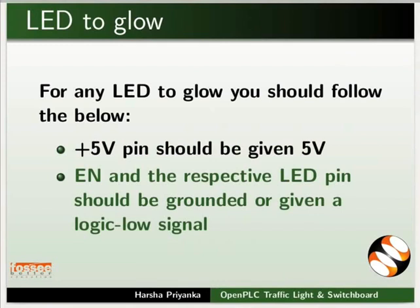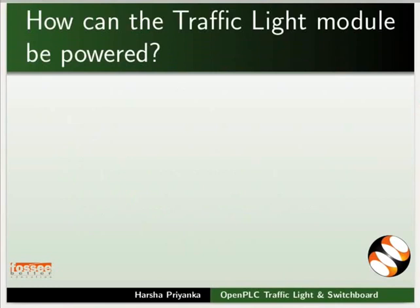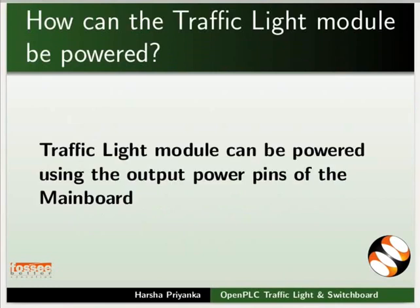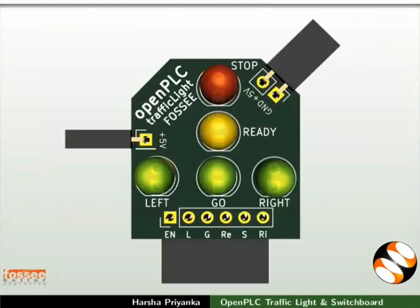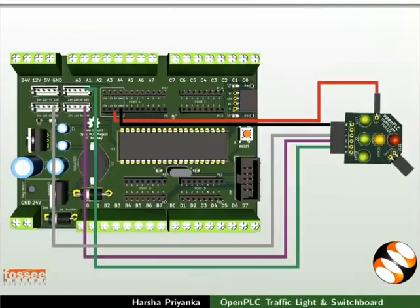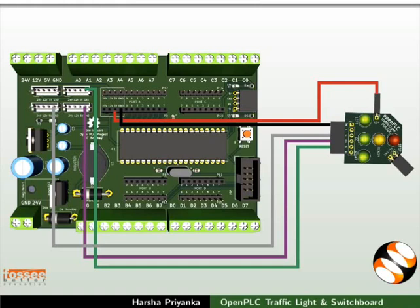Now we will see the working of the module. The traffic light module can be powered using the output power pins of the mainboard. Connect the SMPS to the mainboard as shown. For the demo using the connectors at the bottom: connect 5V to the plus 5V power pin, connect 0V to the EN pin, then connect 0V to any of the LEDs. In this case, connecting to pins marked G, RE, and S. Make the connections as shown in the picture.